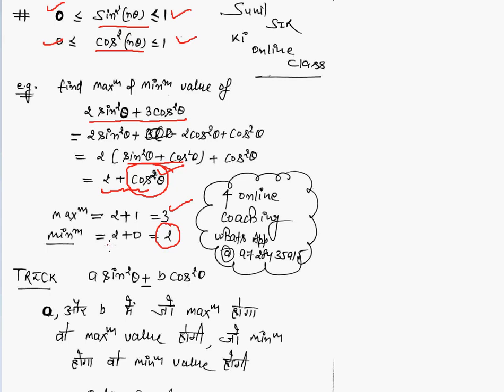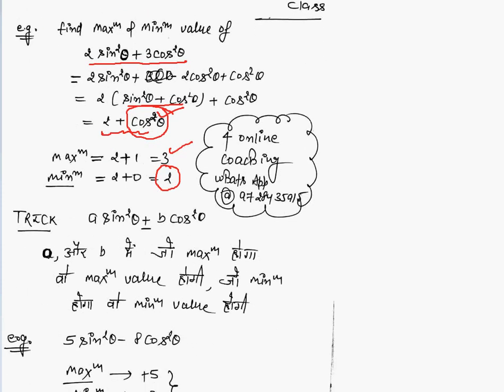So what is the trick? In this type of question when either plus or minus is present, for a·sin²θ + b·cos²θ, the minimum between a and b coefficients is the minimum value, and the maximum between a and b is the maximum value.